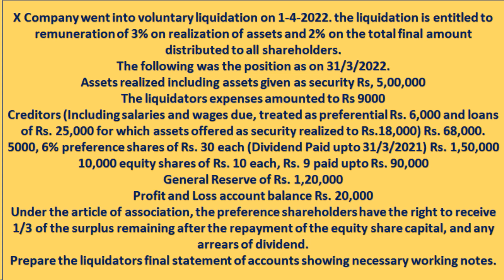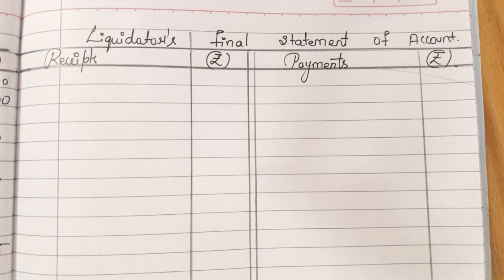10,000 equity shares of rupees 10 each, rupees 9 paid up — rupees 90,000. General reserve of rupees 1,20,000. Profit and loss account balance rupees 40,000. Under the article of association, the preference shareholders have the right to receive 1/3rd of the surplus remaining after payment of the equity share capital and any arrears of dividend. Prepare the liquidator's final statement of account showing necessary working notes.